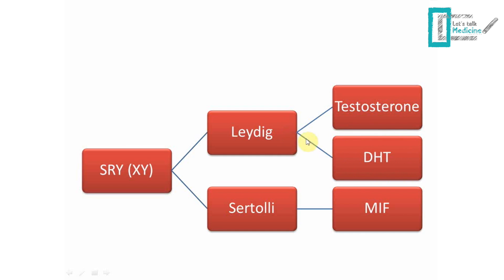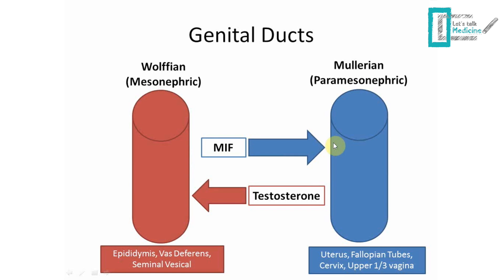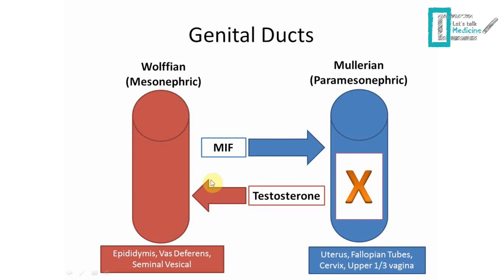So in males: Sertoli cells produce MIF, which inhibits the Müllerian duct — no more uterus, fallopian tubes, cervix, or upper one-third of vagina. Testosterone acts on the Wolffian duct and keeps it alive, so it gives us the epididymis, vas deferens, and seminal vesicles.